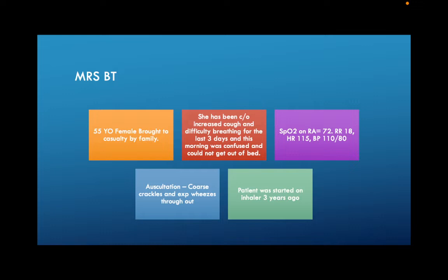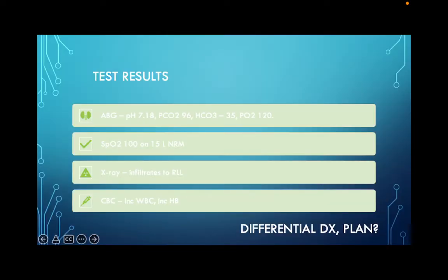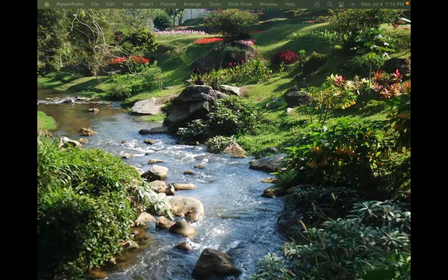ABG - yes, you're in a ventilator lecture, ABG is usually a good guess. Anytime you have someone with respiratory distress and decreased level of consciousness, that should make you think: am I in respiratory acidosis? Respiratory distress and new confusion should point you to a blood gas. So you do a blood gas - the pH is 7.18.